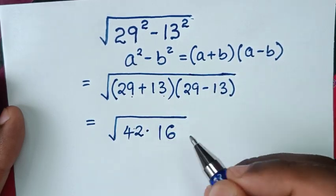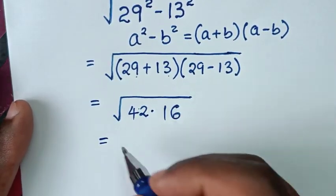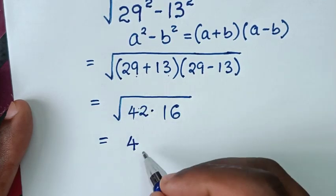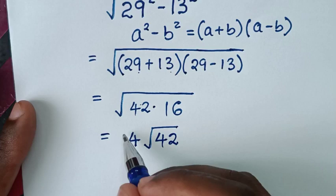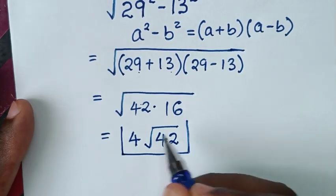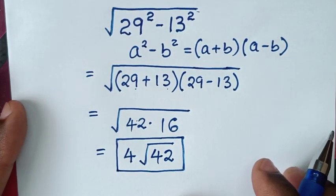Then it will be equal to from square root of 16 it is 4, then times this square root of 42. Therefore, 4 square root of 42 is our final answer. Thank you.